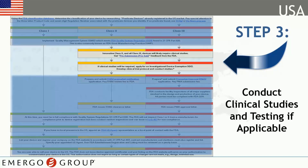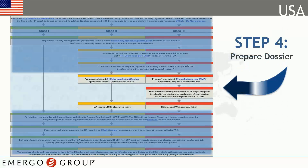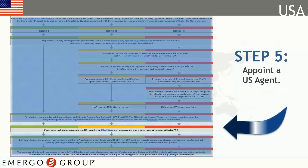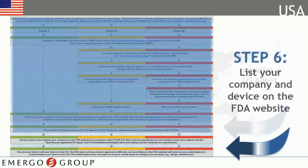Higher risk devices require clinical studies to be performed. Class II devices require the submission of a 510(k) pre-market notification application. Class III devices must submit a pre-market approval application, or PMA. If your organization is located outside the United States, you're required to appoint a U.S. agent as your liaison to the FDA. The final step is listing your device and registering your company on FDA's website.